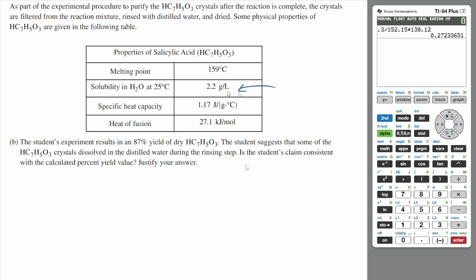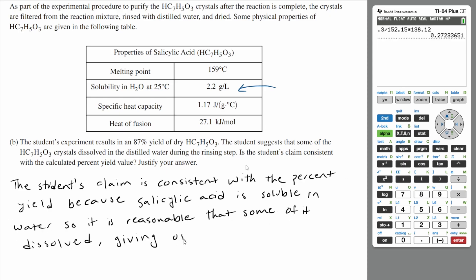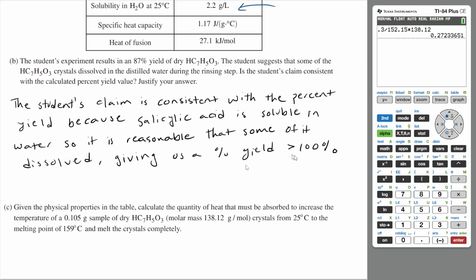If you look at the solubility, it is 2.2 grams per liter, which means that while you rinse it, some of the salicylic acid could have dissolved. That dissolved salicylic acid would not contribute to your percent yield. So yes, the student's claim is consistent with the calculated percent yield because salicylic acid is soluble in water, giving a percent yield of less than 100%.